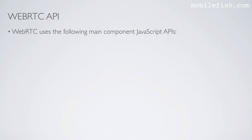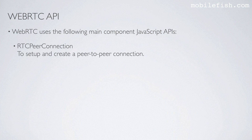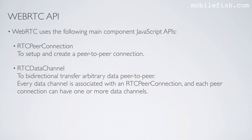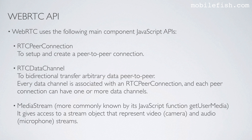WebRTC uses the following main component JavaScript APIs: RTCPeerConnection to set up and create a peer-to-peer connection; RTCDataChannel to bi-directionally transfer arbitrary data peer-to-peer. Every data channel is associated with an RTCPeerConnection and each peer connection can have one or more data channels. MediaStream, more commonly known by its JavaScript function GetUserMedia, gives access to a stream object that represents video and audio streams.